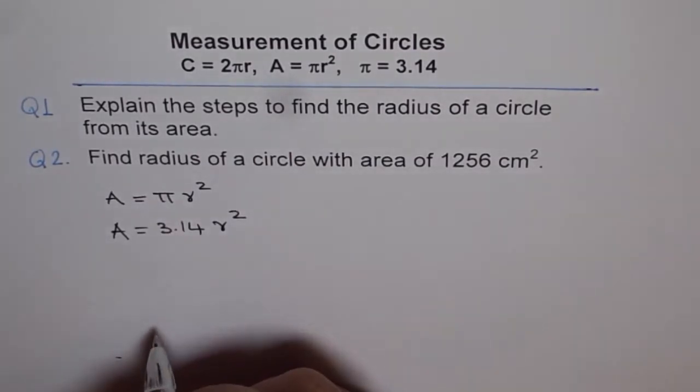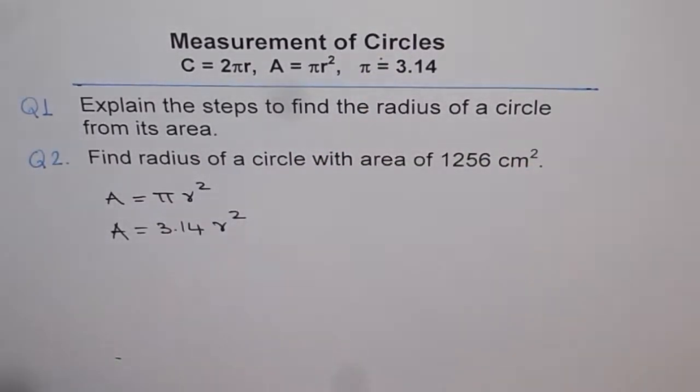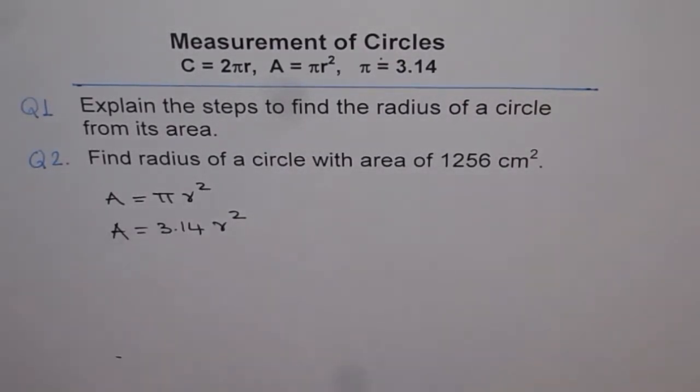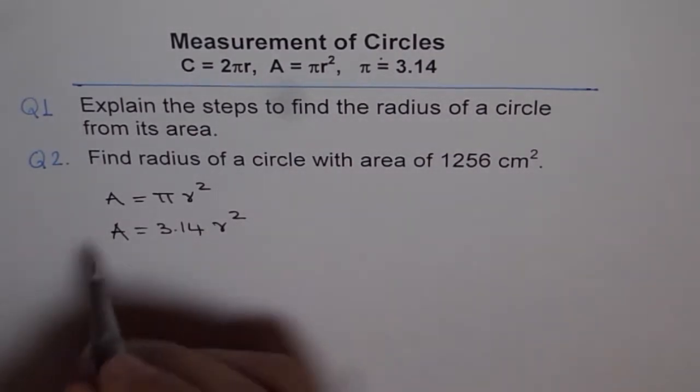Since the value of pi is approximately 3.14, now to find radius square we can divide by 3.14 on both the sides.